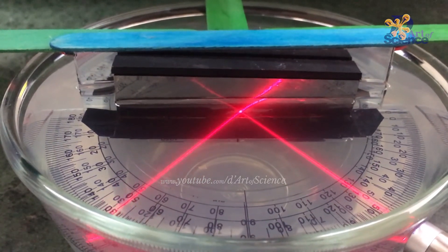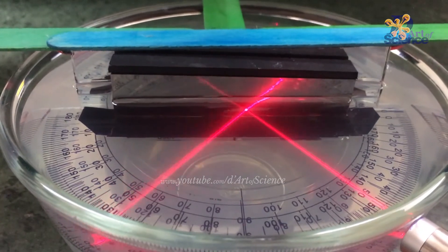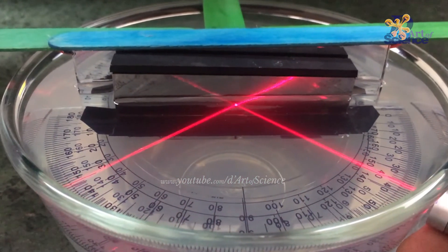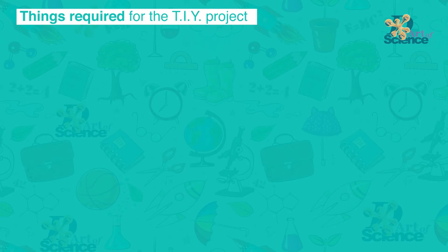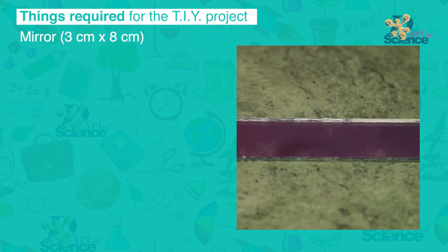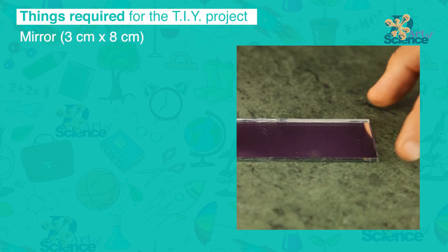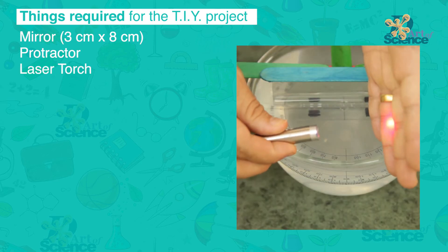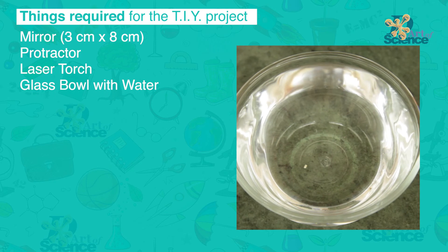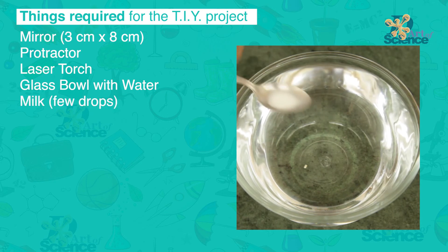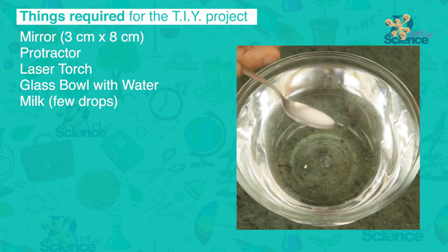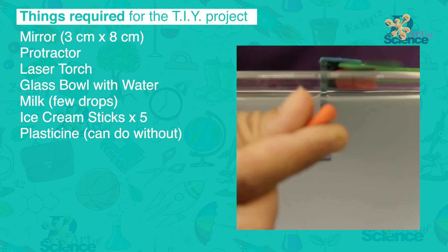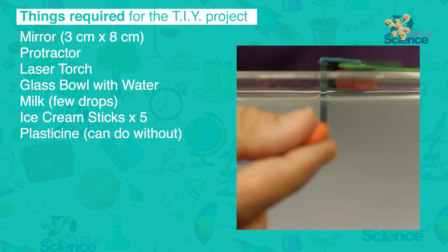Things required for the TIY project: a small piece of mirror (size given in the lesson), a protractor, a laser torch, a glass bowl with water, a quarter tablespoon of milk, five ice-cream sticks, plasticine, and a glue gun.